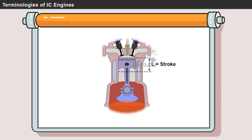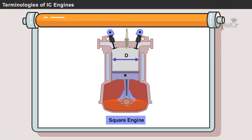The linear distance along the cylinder axis between top dead center and bottom dead center is called as stroke. An engine with equal bore diameter and stroke length is called a square engine.